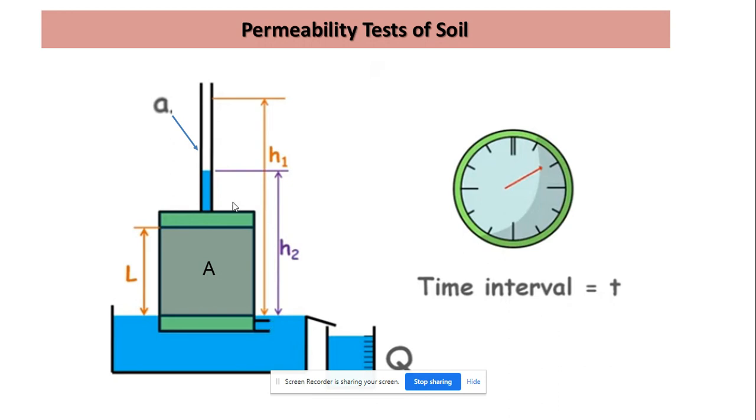We know this change in volume will be small a into h1 minus h2, and the discharge from here, from Darcy's law, will be kiA, where k is the permeability of soil, A is the area of the soil sample, i is the hydraulic gradient. Equating these two equations.